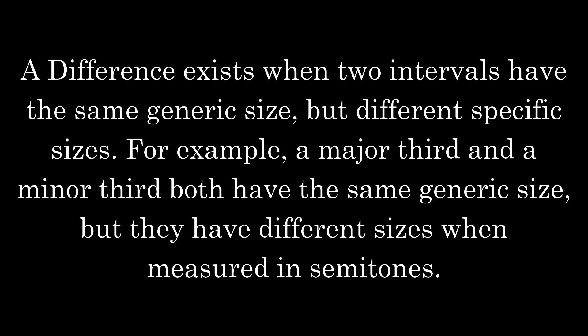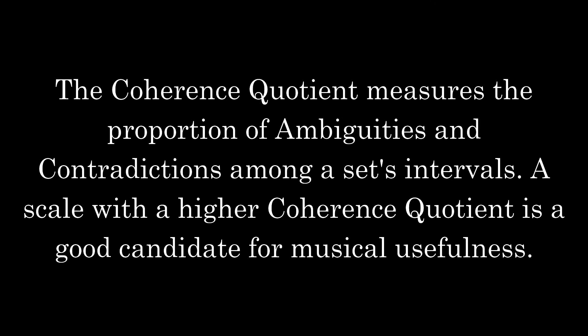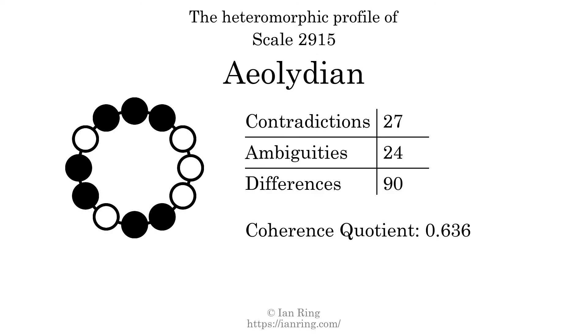A difference exists when two intervals have the same generic size but different specific sizes — for example, a major third and a minor third both have the same generic size but different sizes in semitones. The number of differences in this scale is 90. The coherence quotient measures the proportion of ambiguities among a set's intervals. A scale with a higher coherence quotient is a good candidate for musical usefulness. The coherence quotient is 0.636.